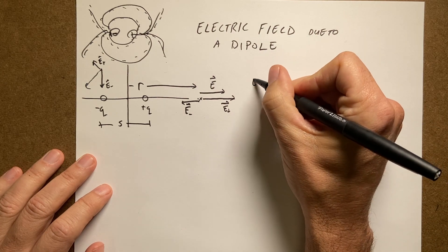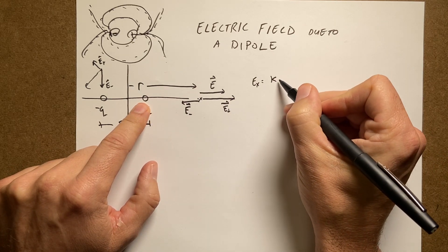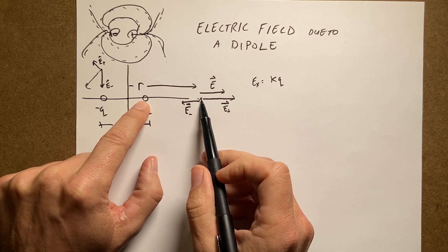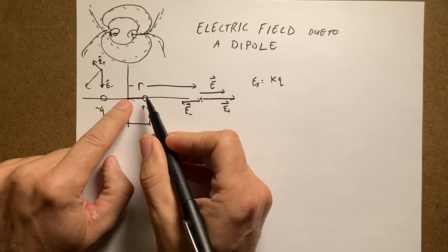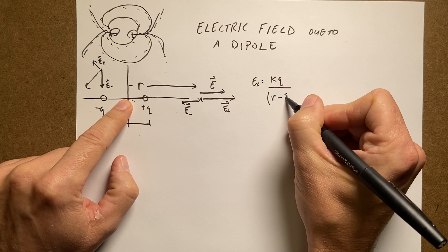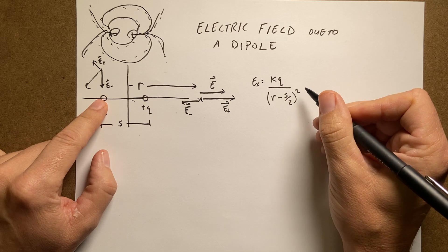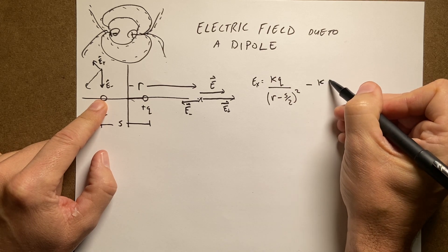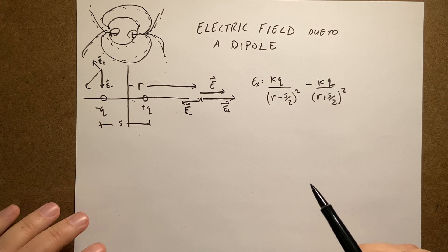So E_x is going to be the electric field due to the positive charge: k times q, and in the x direction it's positive. Now what's the distance from here to there? Well, the distance is r and this half-separation is s over 2, so this is going to be r minus s over 2, quantity squared. Now I have to add the electric field due to the negative charge. This is going to be in the negative x direction, so I'm going to say minus kq, and this distance is going to be r plus s over 2, quantity squared. So this is the answer.